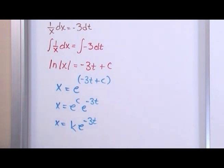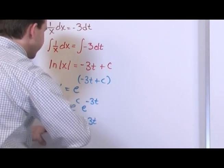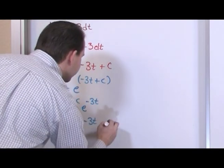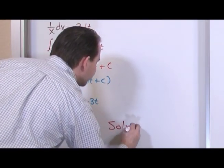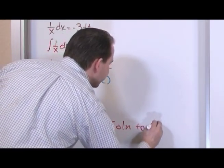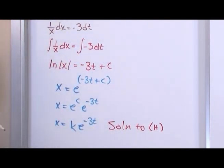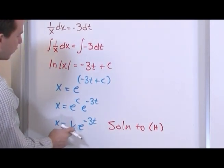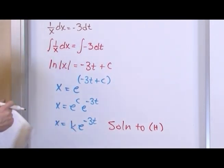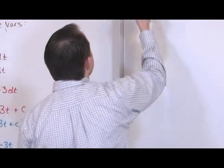We've made a tremendous amount of progress. This is the solution to the homogeneous version — the simpler version of the equation without the forcing function, the function of time over there. We're going to go ahead and use this to find the solution to the other part. What we're going to do is vary the parameter — cause k to vary as a function of time.